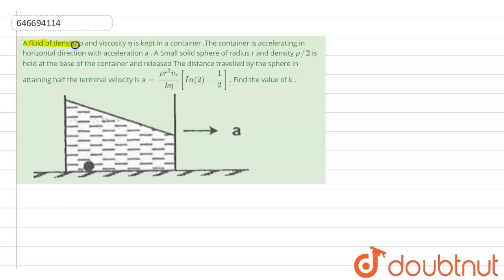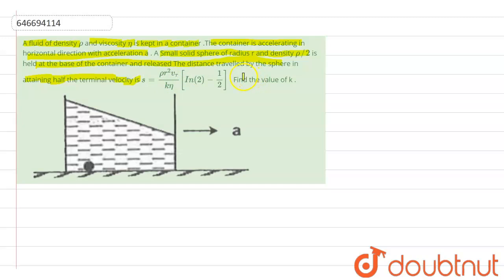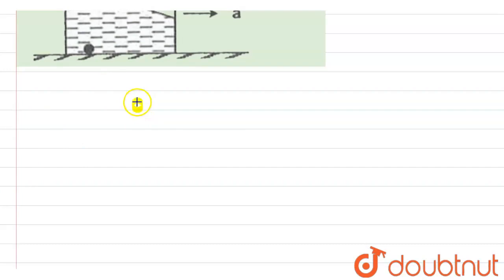In this question, a fluid of density rho and viscosity eta is kept in a container. The container is accelerating in the horizontal direction with acceleration a. A small solid sphere of radius r and density rho/2 is held at the base of the container. The distance traveled by the sphere in attaining half of the terminal velocity s equals rho r squared times vt upon k eta, times (ln2 minus 1/2). We have to calculate the value of k.